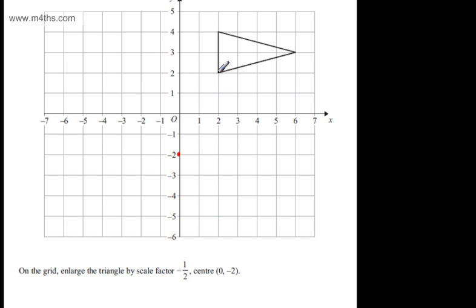So if I take this point here, to get to zero comma minus two, the translation would be minus two minus four. So all I'm going to do is half that. So it's going to be minus one minus two, and I'm going to redraw the point just here.